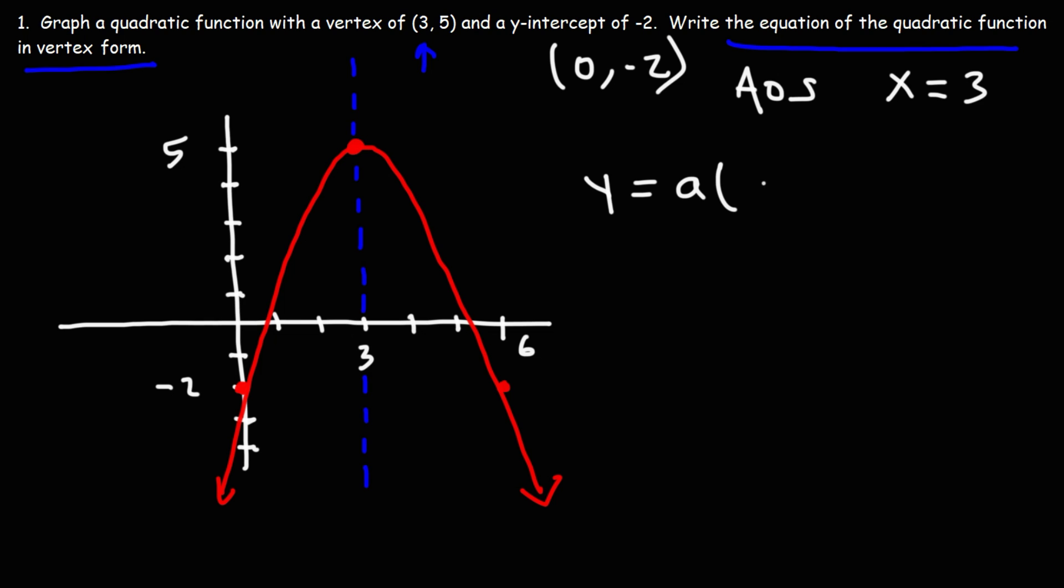Let's start with the vertex formula of a parabola or quadratic function. It's y = a(x - h)² + k. What you need to know is that the vertex is (h, k). So the x coordinate of the vertex is h and the y coordinate is k. So we can see that h is 3, k is 5. So right now we have y = a(x - 3)² + 5.